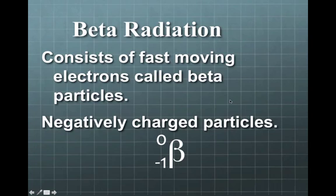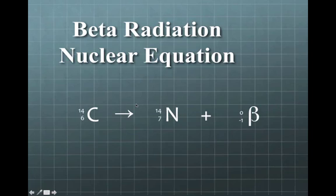Beta radiation is the second type of radiation I'll talk about. This consists of fast-moving electrons called beta particles. Electrons have a negative 1 charge, so they are negatively charged. Let's look at beta radiation nuclear equation.